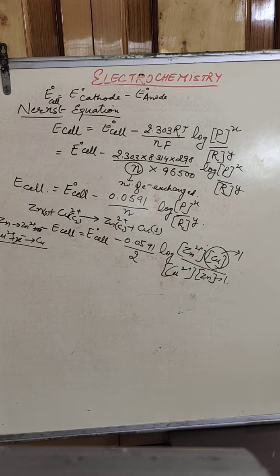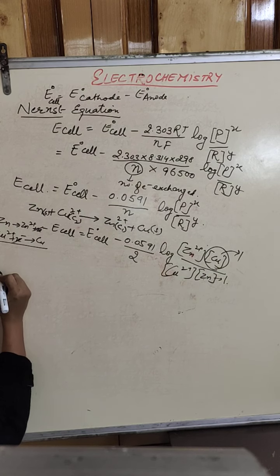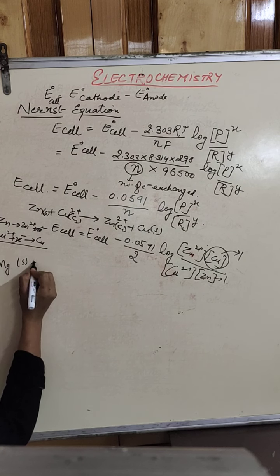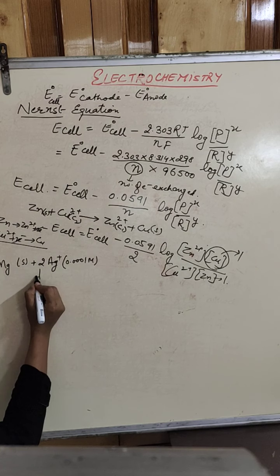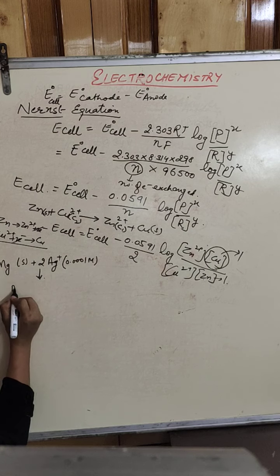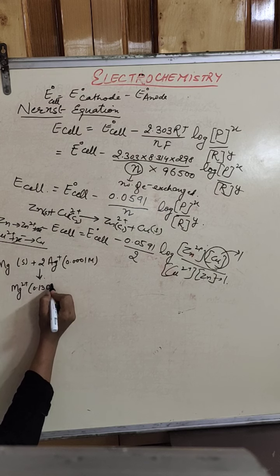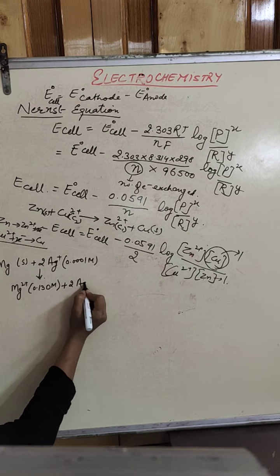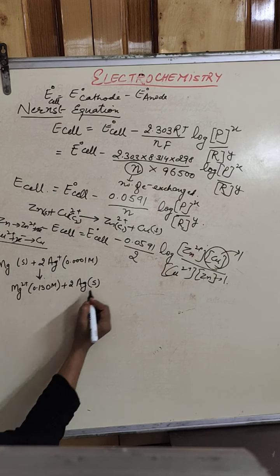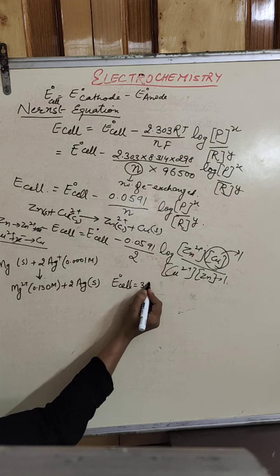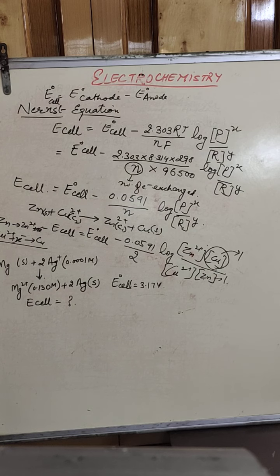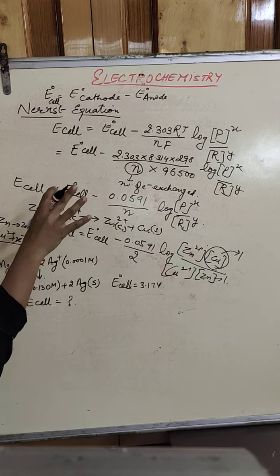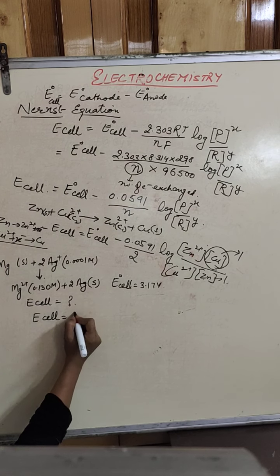Now let's take an example for the Nernst equation. Suppose the given cell reaction is: magnesium solid reacting with silver ions (concentration of silver ions given) resulting in formation of magnesium ions at 0.130 molar concentration, plus 2 silver solid. The E0 cell is given as 3.17 volts, and we are supposed to calculate the EMF of the cell.